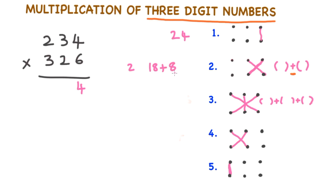Step 3: 6 times 2 is 12, plus 3 times 4 is 12, plus 3 times 2 is 6. 12 plus 12 is 24, 24 plus 6 is 30, 30 plus 2 is 32. 3 is carry over.